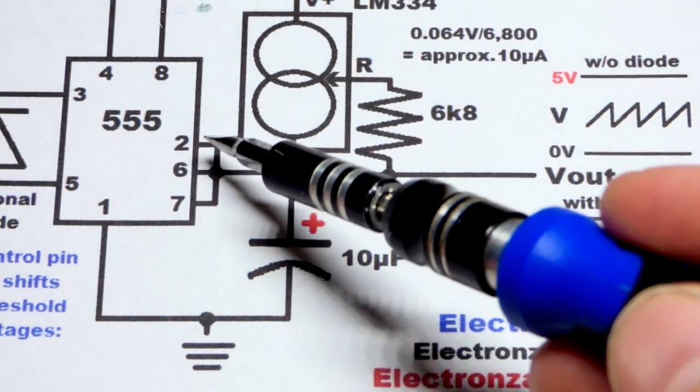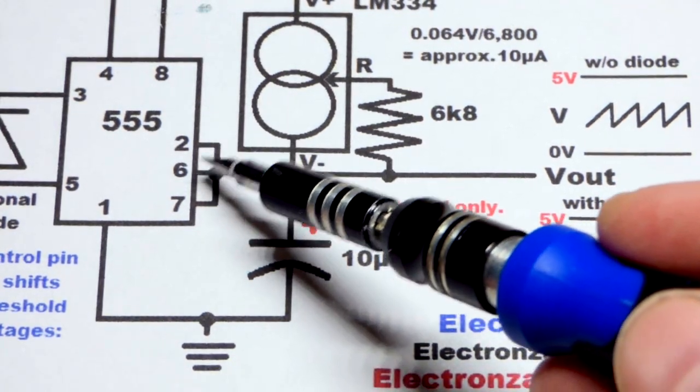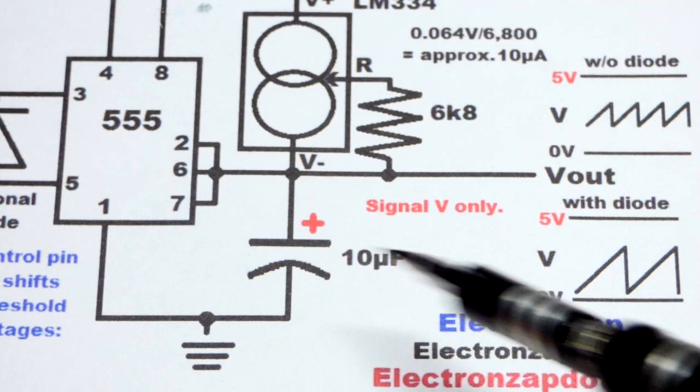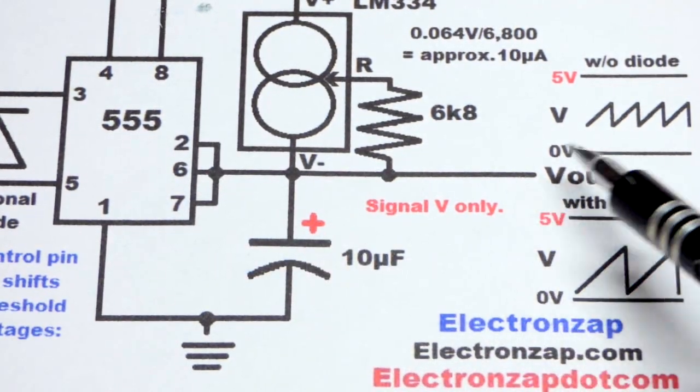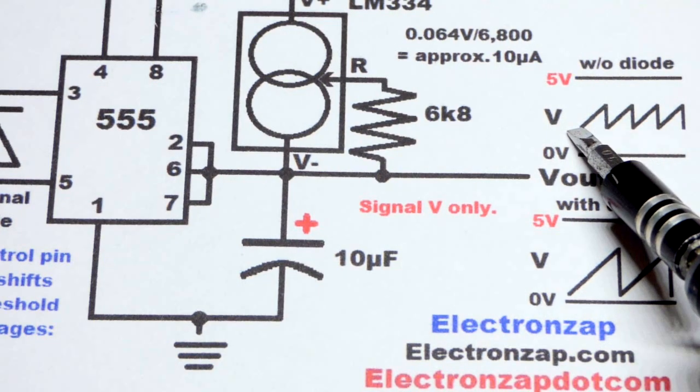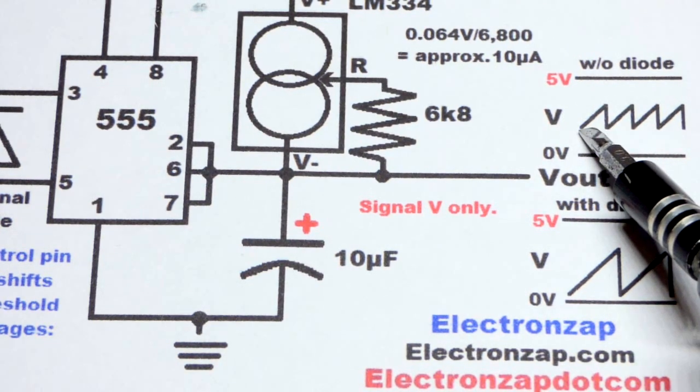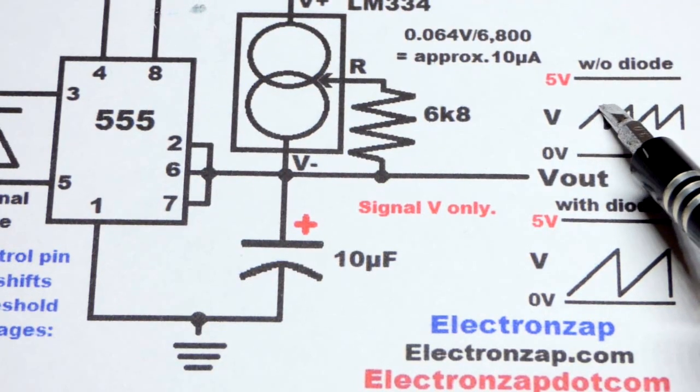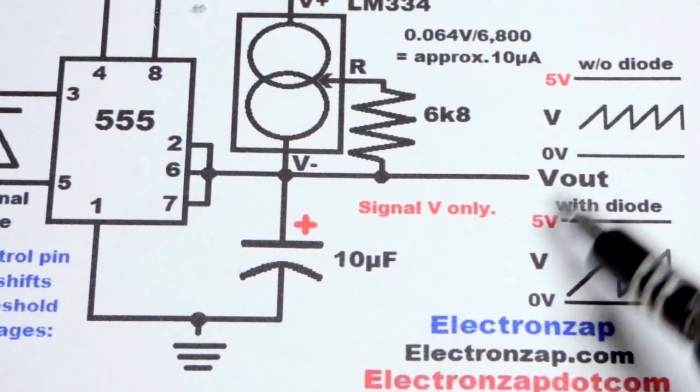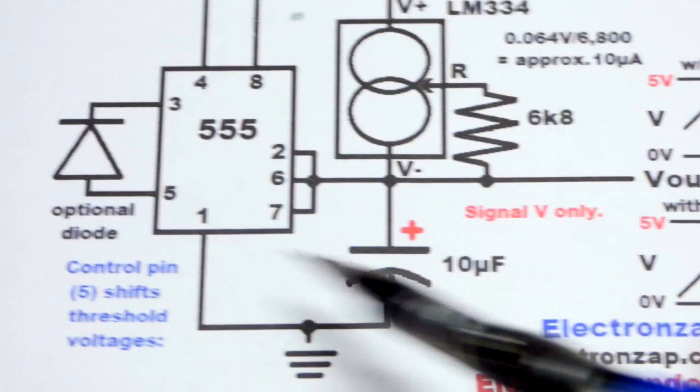When you've got pin 2 and pin 6 tied together—that's the trigger pin and the threshold pin—they're looking at how charged the capacitor is. Pin 2, the trigger pin, waits for when the capacitor is one-third of the supply voltage. Pin 6, the threshold pin, is waiting for when the capacitor is two-thirds of the supply voltage, if you don't shift them.